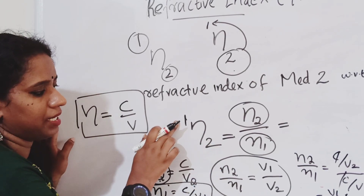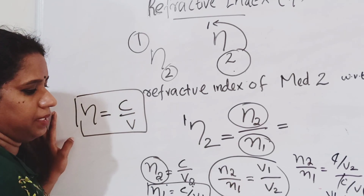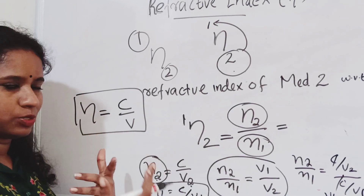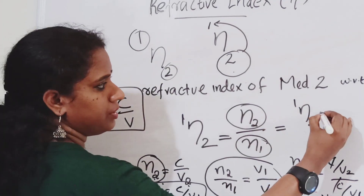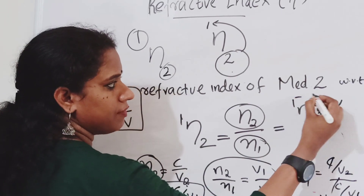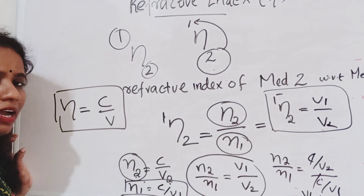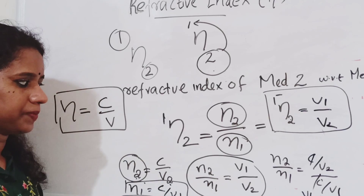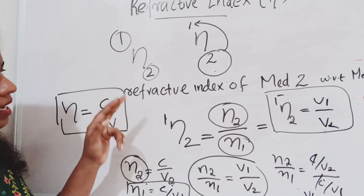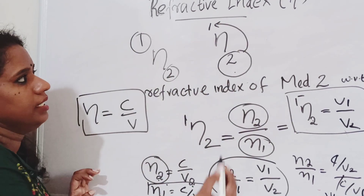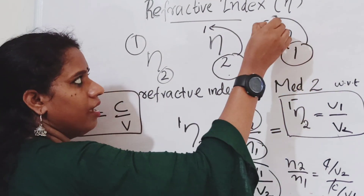This gives us N2 by N1, which equals C by V2 divided by C by V1, simplifying to V1 by V2. The refractive index of the first medium with respect to the second medium can similarly be defined.